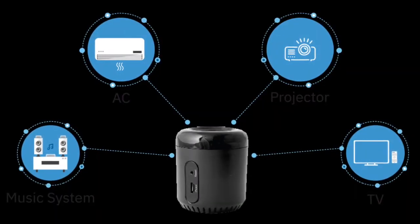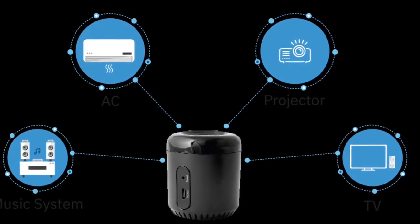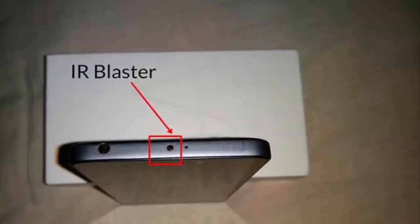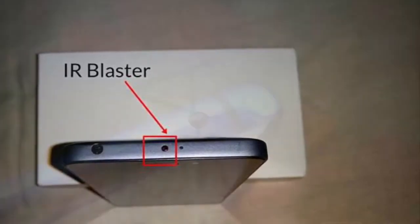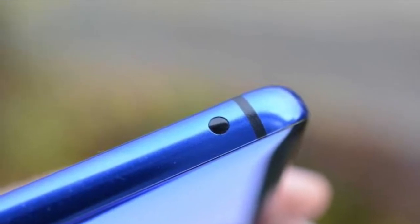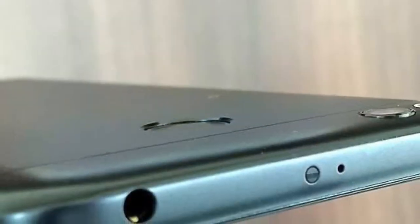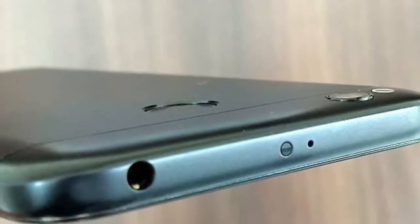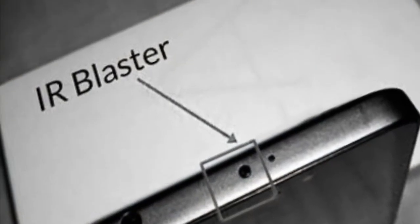If you click on the TV button, you can see the IR Blaster receiver and the ACS button. If you click on the receiver button, you can see the receiver button.